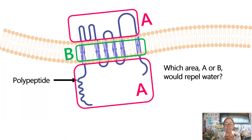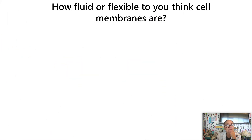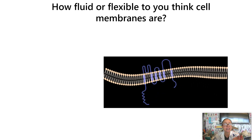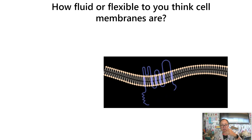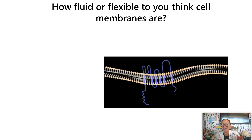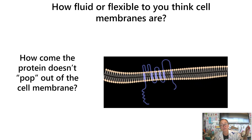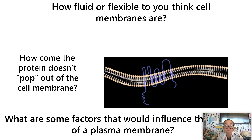A protein won't pop out of the membrane because region B is nonpolar — it repels water, anchoring the protein within the membrane. Membranes are fluid and flexible, with fluidity roughly equivalent to thick oil or thick salad dressing. Proteins don't pop out due to those nonpolar amino acids anchoring them in the transmembrane region. But what other factors might influence the fluidity of a membrane?